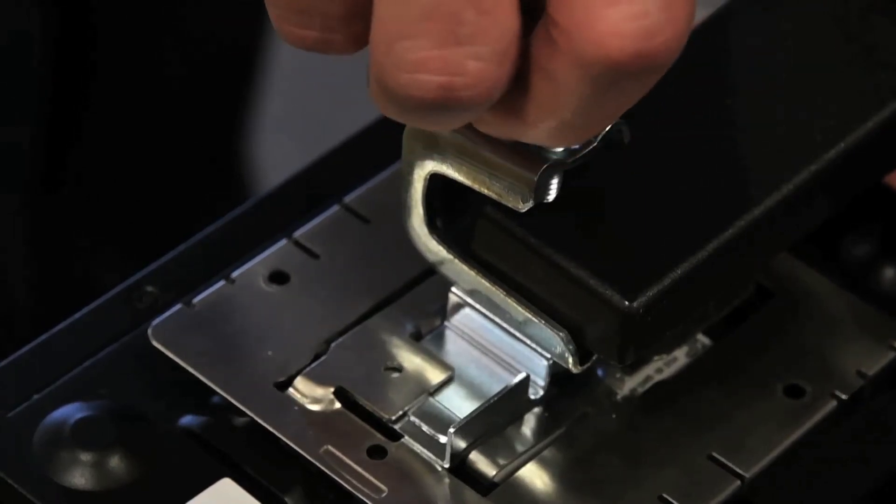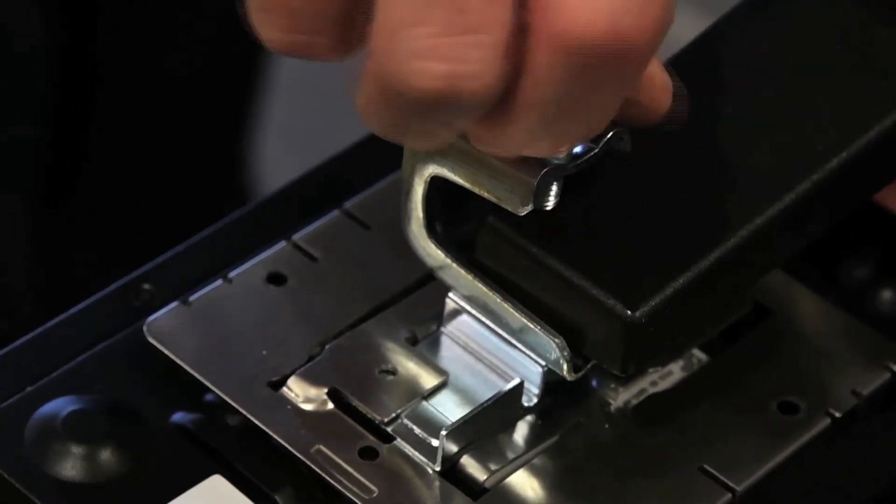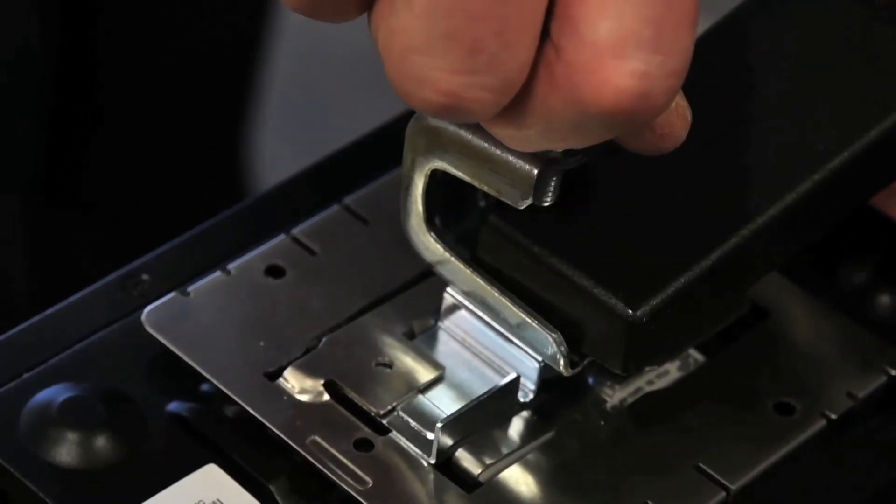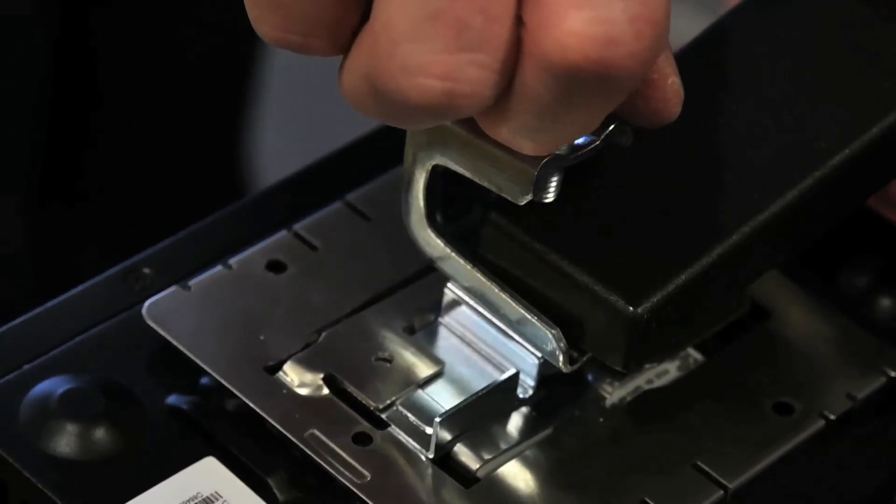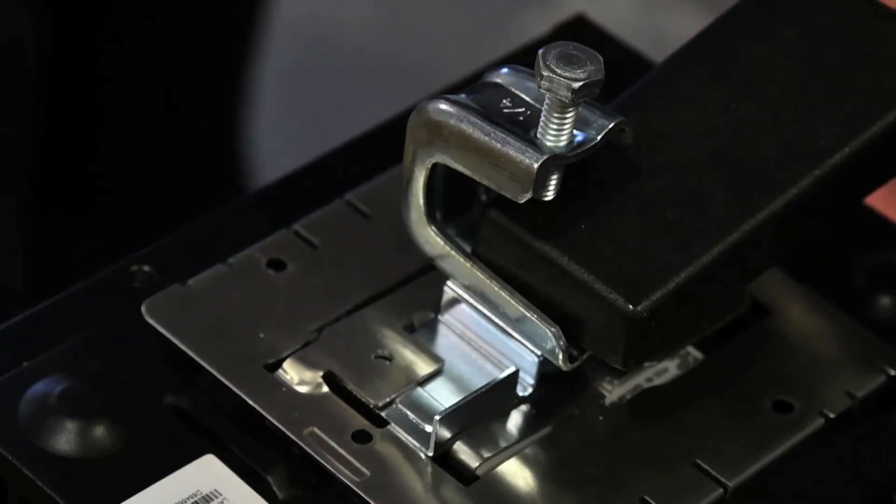Go to the beam and attach the beam clamp. Tighten the beam clamp to a torque of 55 inch pounds. Wiggle the AP to verify the AP is solidly attached to the beam.